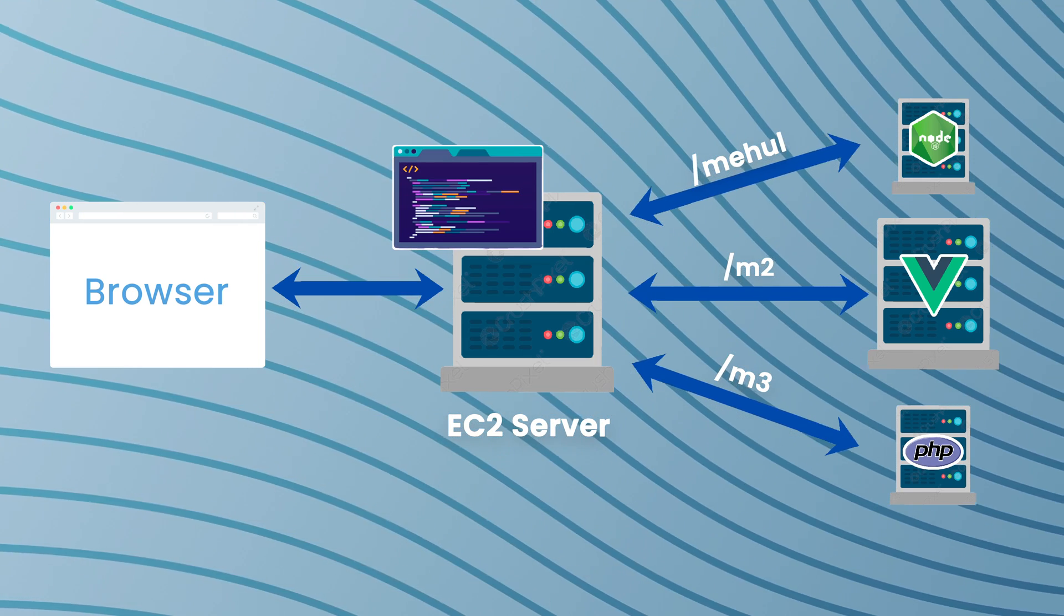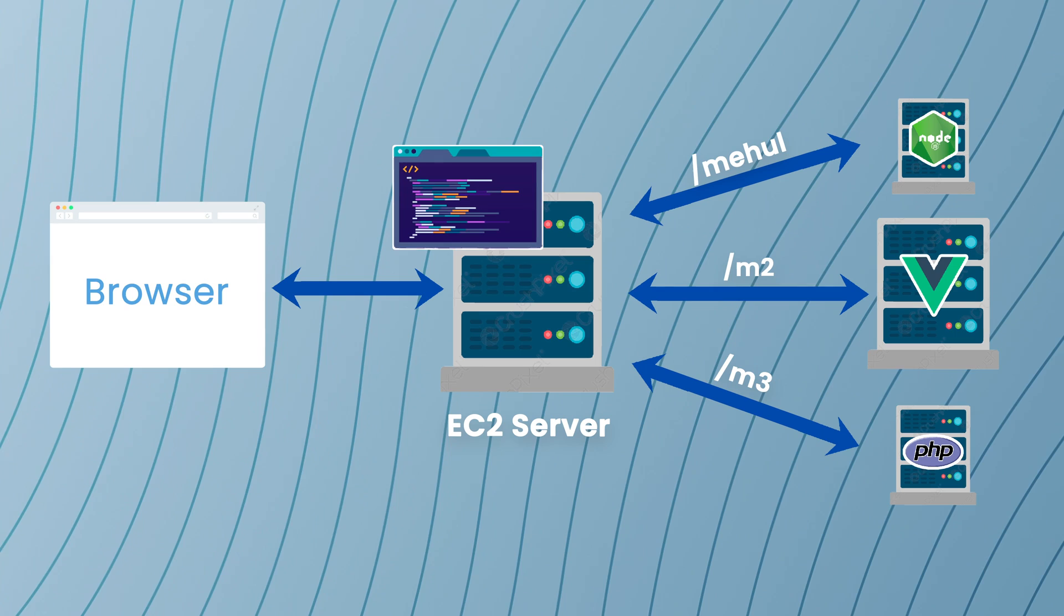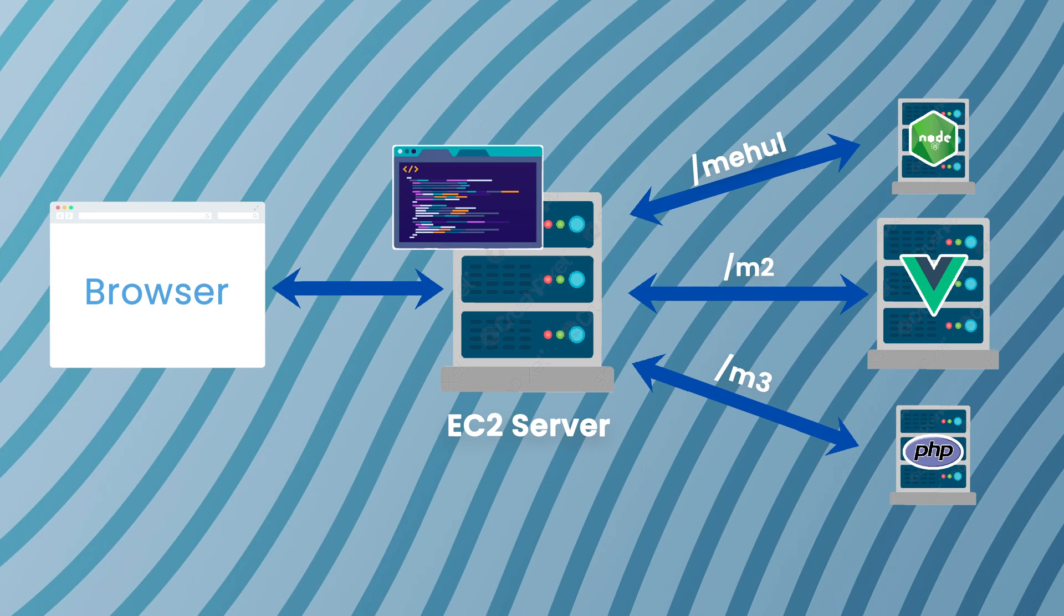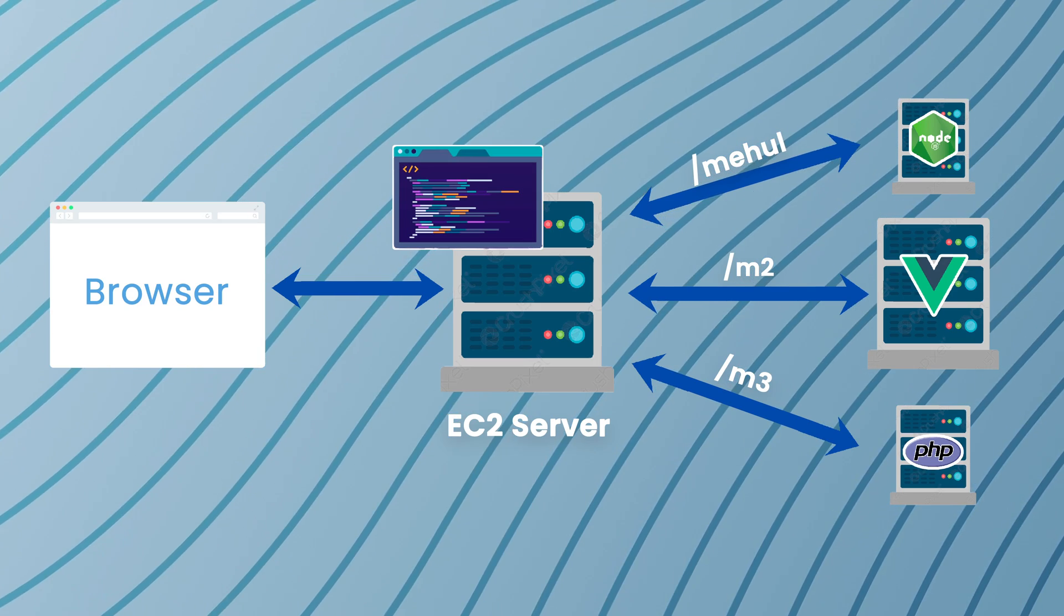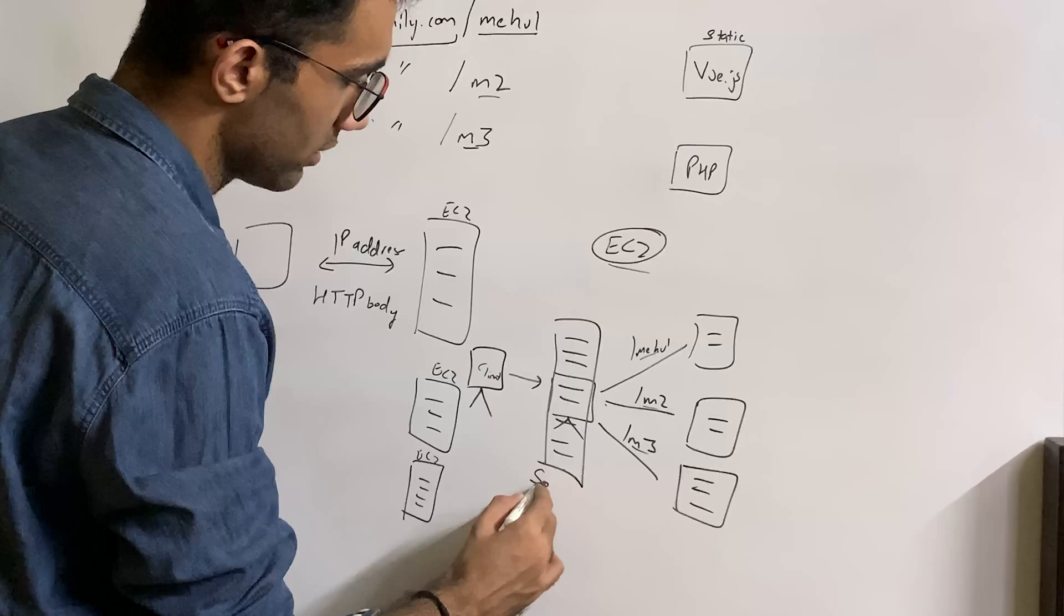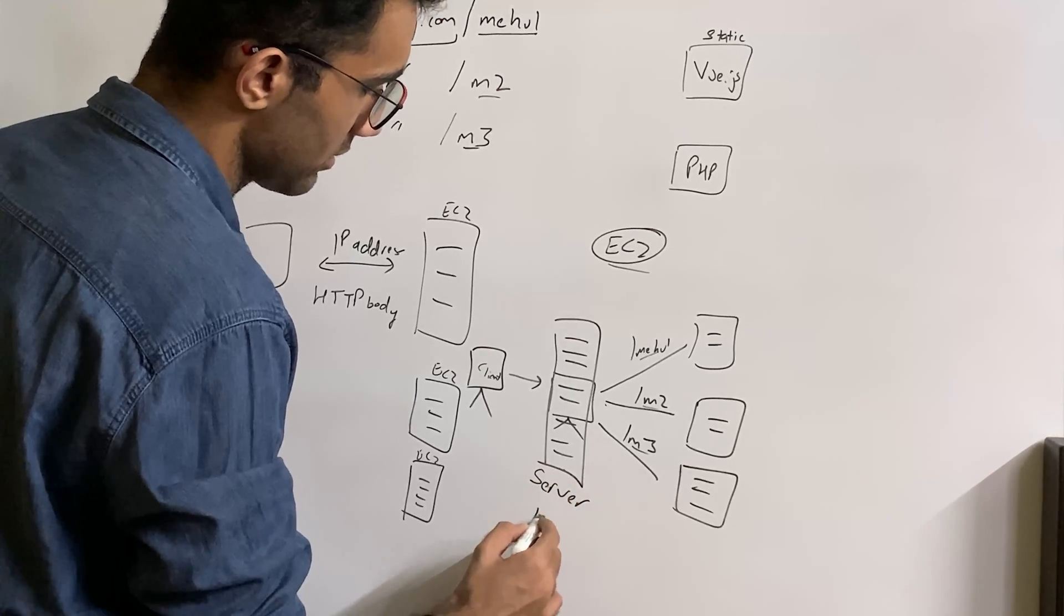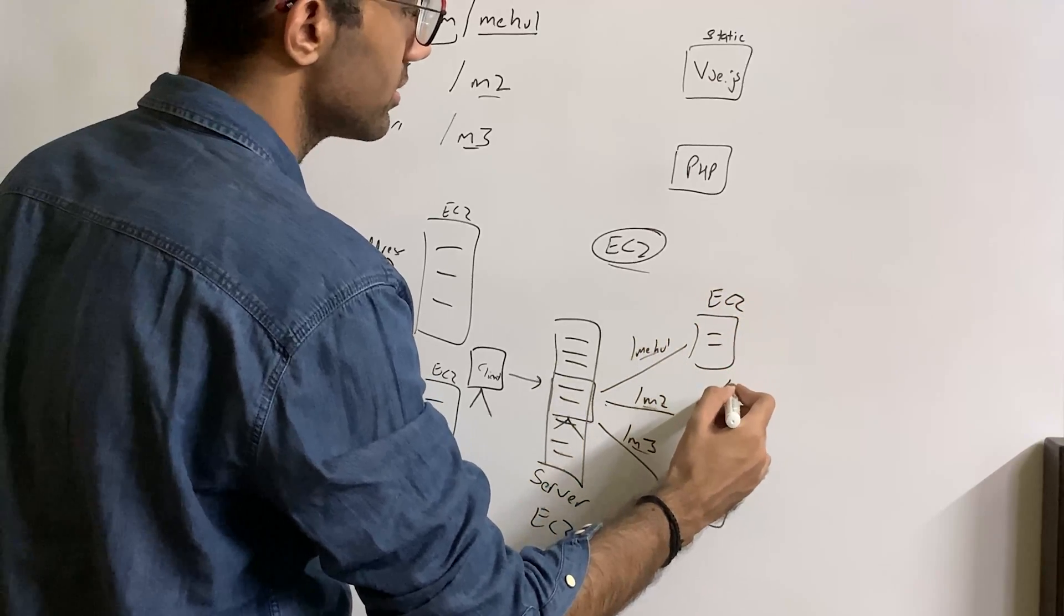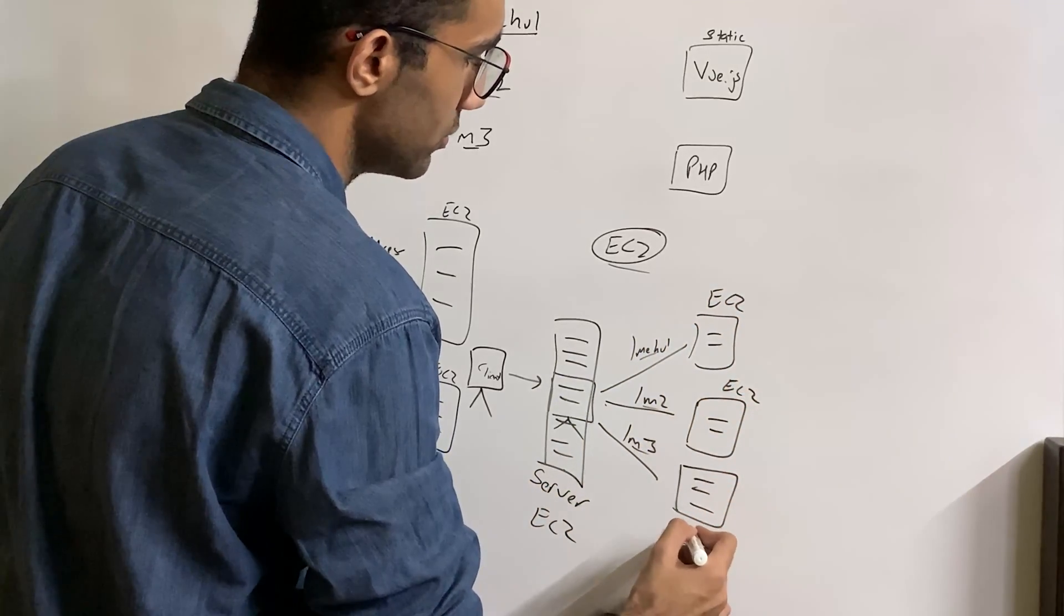So what we do instead of this is that we write a special program on the server itself which does this handling, and we put the client one layer behind. So your server right here now determines what path you are coming in this specific case—whether it's Mehul, whether it's m2, whether it's m3—and the client is just connecting to a regular server.